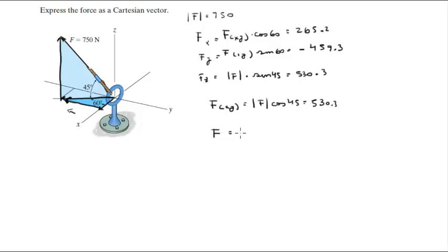So the Cartesian vector form is 265.2i minus 459.3j plus 530.3k. Final answer.